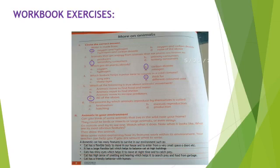Now question number two is animals in your environment. Can you think of some animals that live in the wild near your home? They could be bird or insect or large animal or even a stretch. Go outside and try to see one. Watch what it does. Note what it looks like. What are its most obvious features? Then draw this animal. Write some notes explaining how its features work within environment. Your teacher can help you if you are unsure what to write. So here I am giving you the example of a domestic cat. So you have to write these features in your book and you will draw a picture of a cat. And also you have to write another example by yourself.